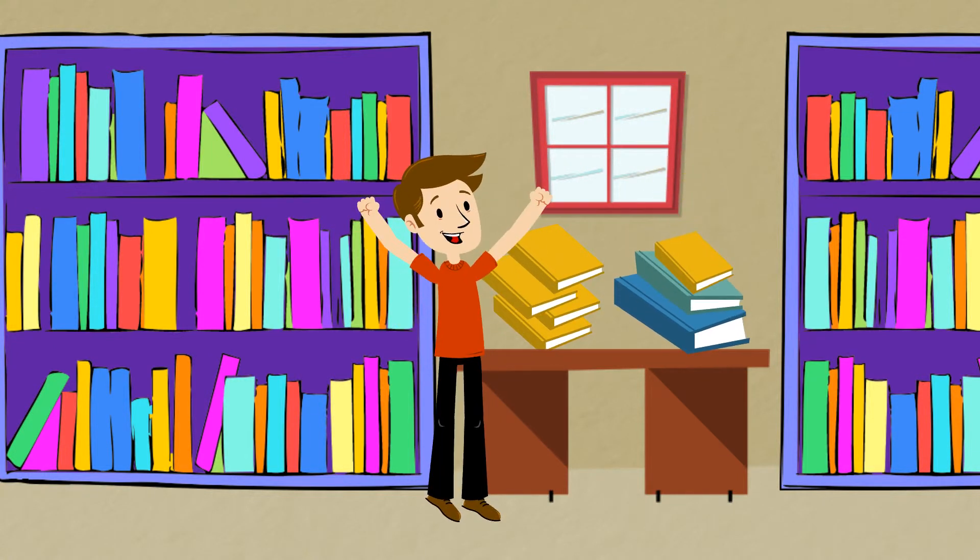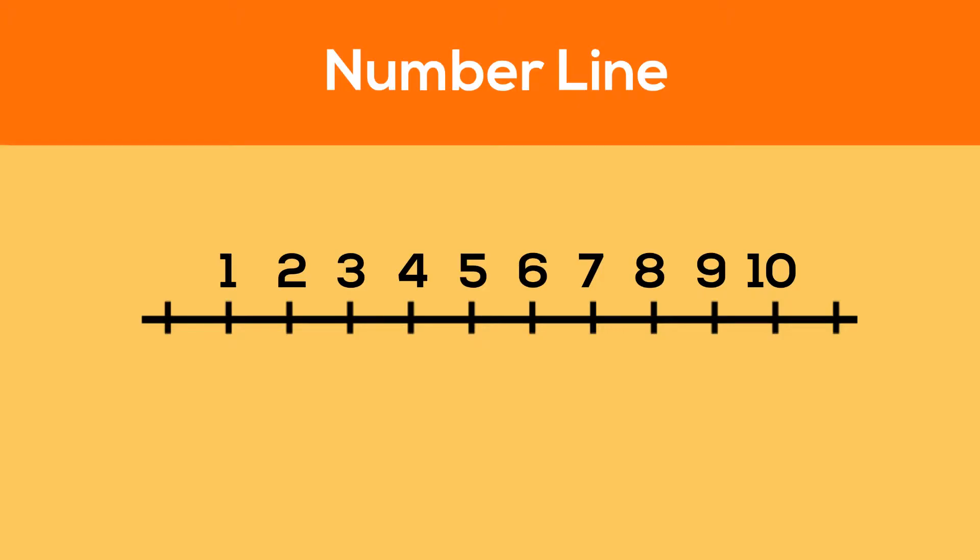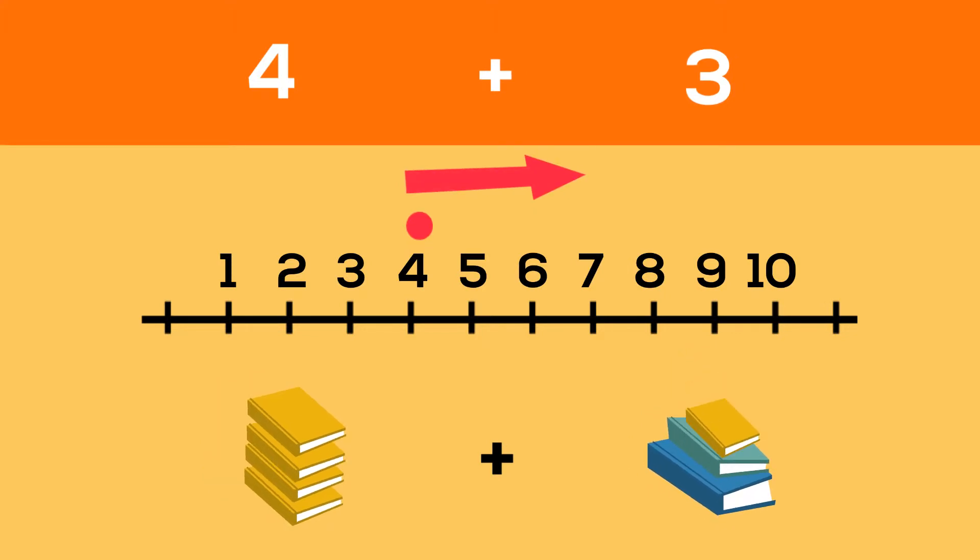How many books does he have now? Let's use a number line to find out. Jake started with four books, which means we start at four on the number line. Since he borrowed three more books, we must move to the right three times. Count with me: one, two, three.